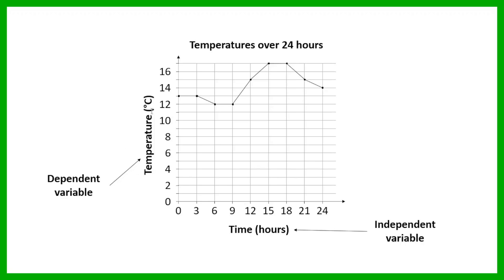So the temperature, which is on our vertical axis, is the dependent variable, and the time is the independent variable. When you are plotting a graph, the independent variable goes on the horizontal axis, and the dependent variable goes on the vertical axis.